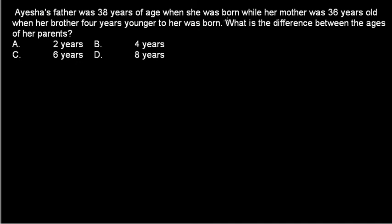Her mother was 36 years old when her brother, 4 years younger to her, was born. So the problem is that the age of her father is given with respect to Aisha's birth, and the age of her mother is given with respect to her brother's birth. So if we consider the age gap between Aisha and her brother, we can overlap this gap.